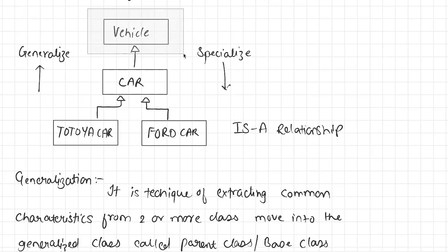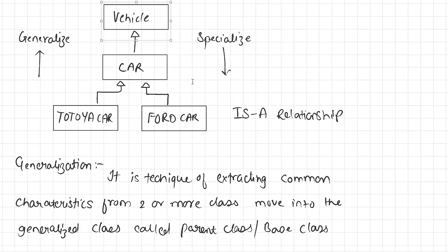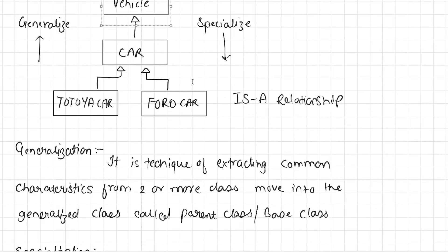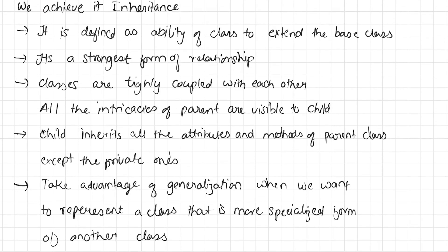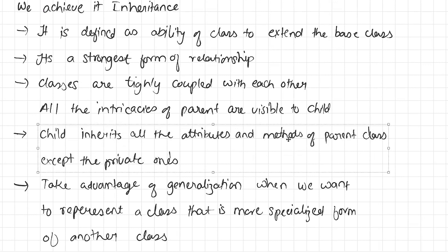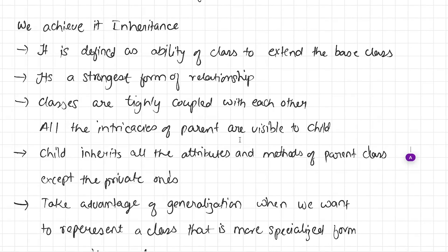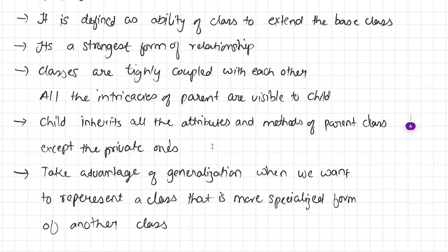The base class has all the common characteristics of all the child classes, and the child class has all the specific characteristics that are specialized. All child classes inherit all the attributes and methods of the parent class, except the private ones — child classes cannot inherit private attributes and methods of the base class, because private fields and methods belong solely to the class in which they are declared. Whenever we want to represent a class that is a more specialized form of another class, we must use generalization.